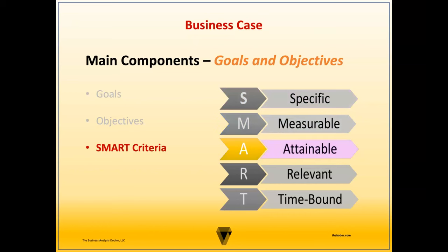Attainable objectives are feasible and realistic in relation to the effort to achieve them. Objectives should take available resources, skills, and constraints into account. Relevant objectives align with the enterprise's vision, mission, and goals. Irrelevant objectives waste time and resources. Time-bound objectives provide a clear endpoint for evaluation.